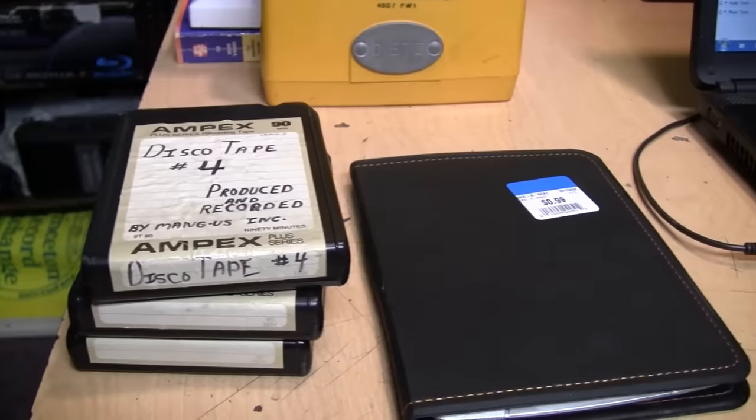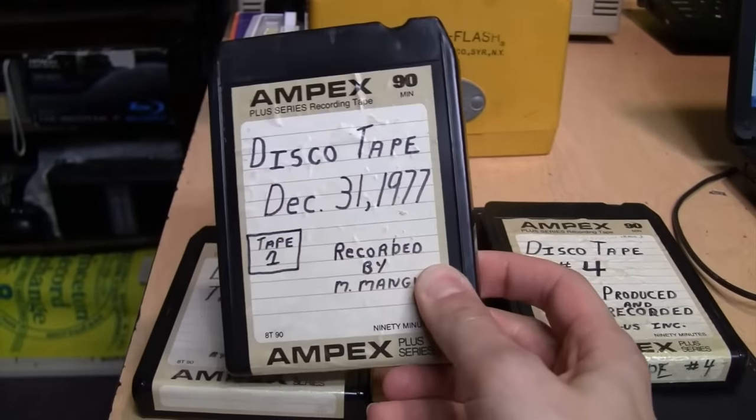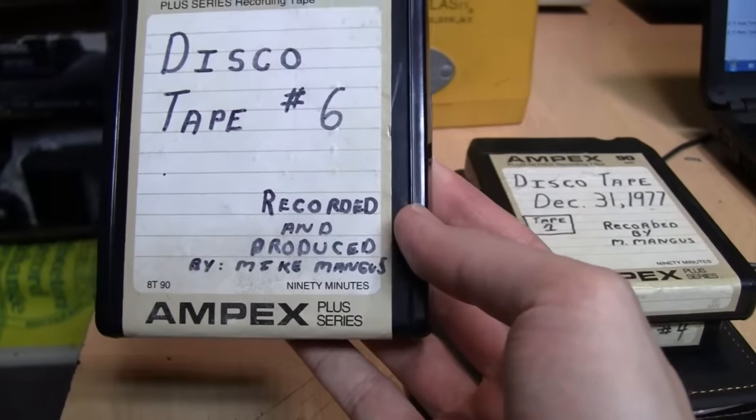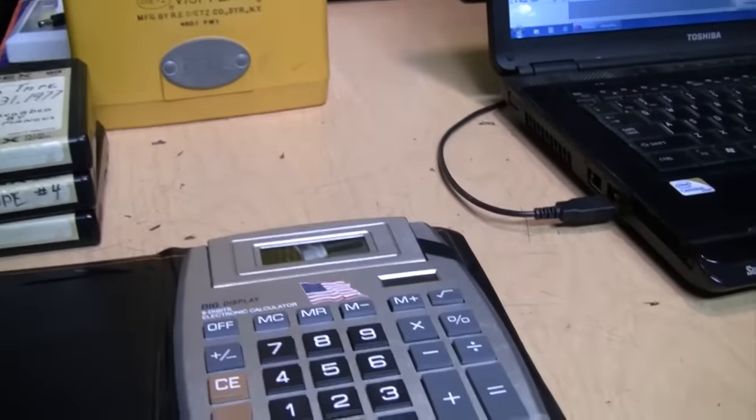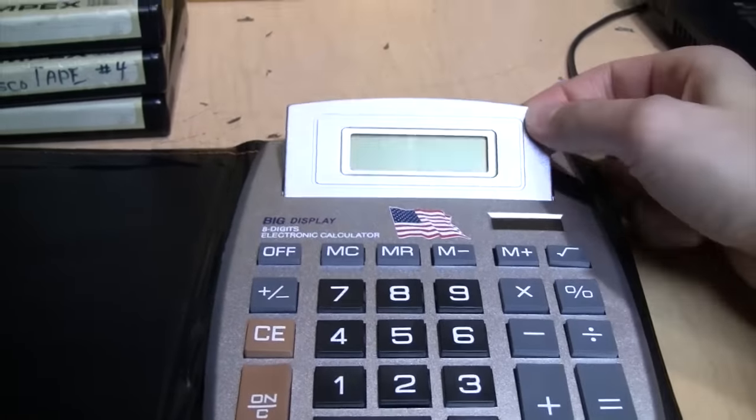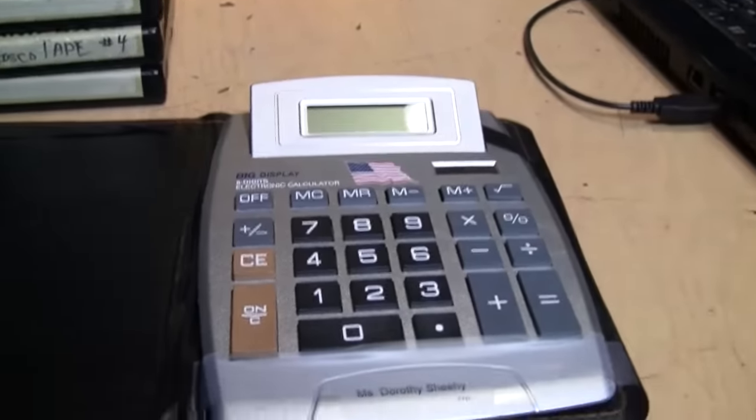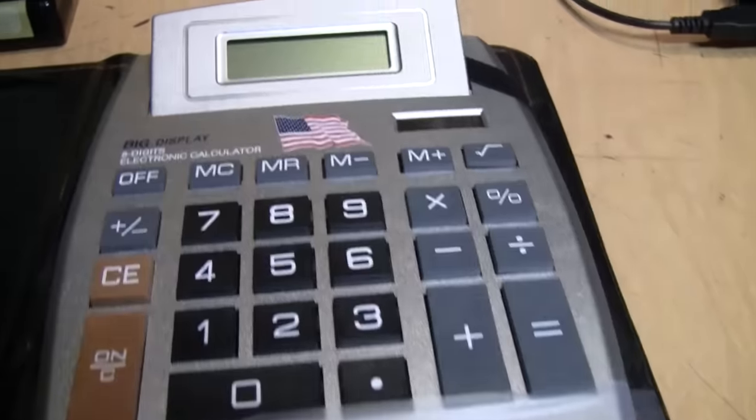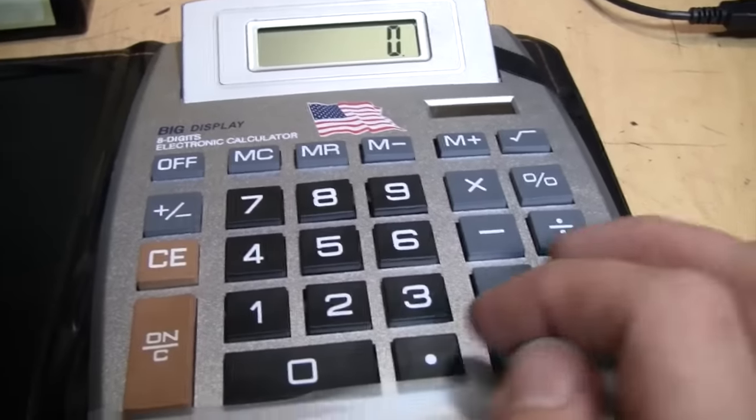But wait, there's more. I have a late breaking addition to this video. I went to the thrift store again and I picked up not only Disco Tape number four, Disco Tape number one, and Disco Tape number six, recorded and produced by Mike Magnus approximately in 1977, but I also got one of these infamous American flag big button, big display calculators. You're pretty much guaranteed to find at least half a dozen of these in any thrift store you go to. Apparently this one was originally owned by Ms. Dorothy Sheehy. But we'll see if this little solar cell is real or not. First let's see if this thing actually works.